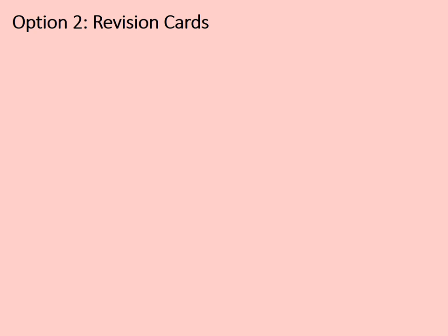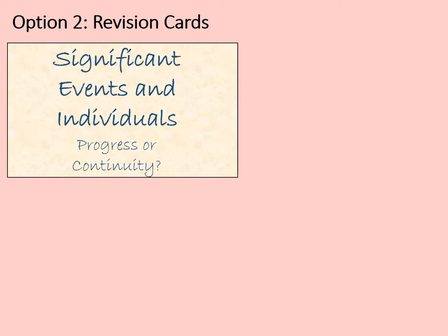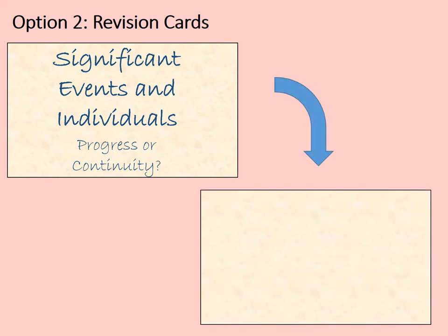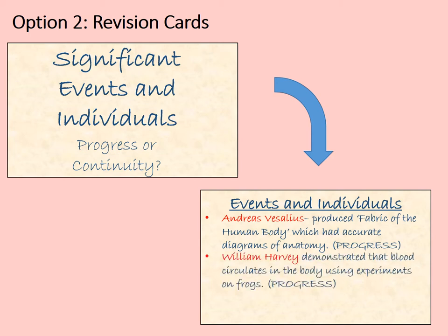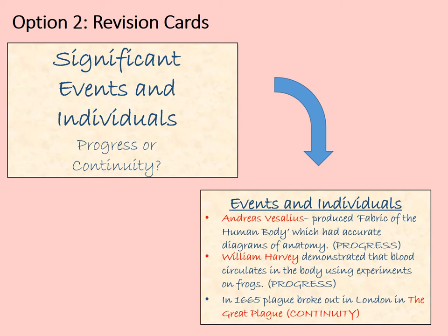Option two is revision cards. On one side you will have the overall heading of that particular factor — for example, 'significant events and individuals: progress or continuity?' On the reverse you put your facts. Andreas Vesalius produced the Fabric of the Human Body — accurate diagrams of anatomy. William Harvey demonstrated that blood circulates in the body using experiments on frogs. In 1665 the plague broke out in London, known as the Great Plague. Vesalius and Harvey represent progress; the Great Plague represents continuity with the understanding that existed at the time of the Black Death.